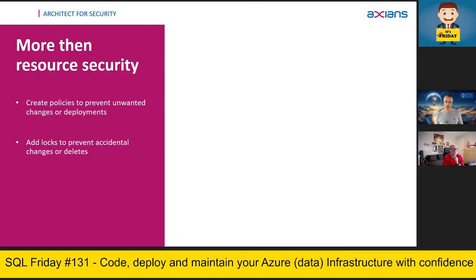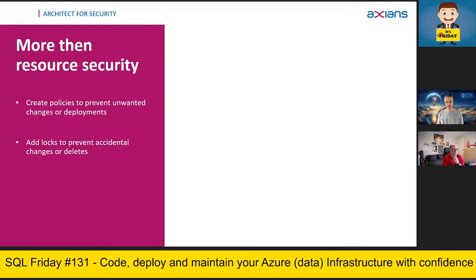Something else is data security. How many times has it happened that somebody dropped a database or changed something accidentally? Let's prevent accidental deletions by putting a delete lock on resources. Whenever anyone presses delete, a message pops up saying a lock is in place. To remove the delete lock, you need elevated permissions — so as long as nobody has those permissions, nobody can delete the resources.